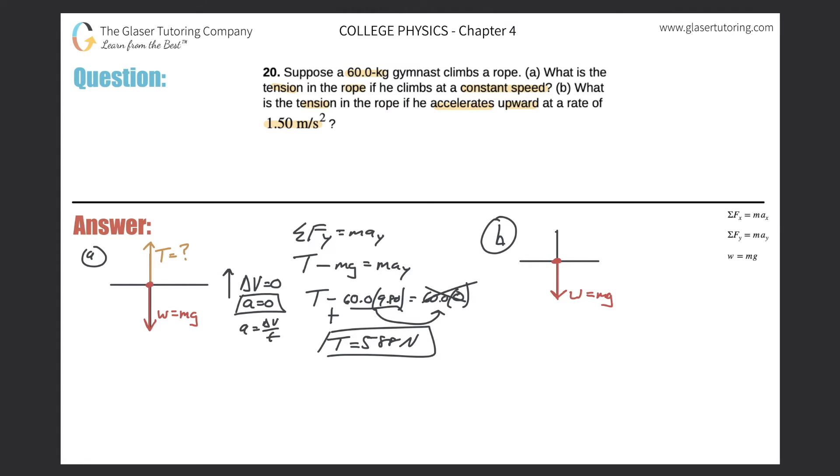And the rope still has a tensional force pointing upward. That hasn't changed. There's still an opposite force opposing the weight. The only difference here now is that there is an acceleration. So there is something going upwards or positive, and that acceleration in that y direction is 1.50 meters per second squared.